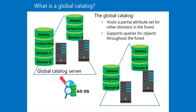Within a single domain, the ADDS database on each domain controller contains all the information about every object in that domain. However, only a subset of this information replicates on the global catalog servers in other domains in the forest.